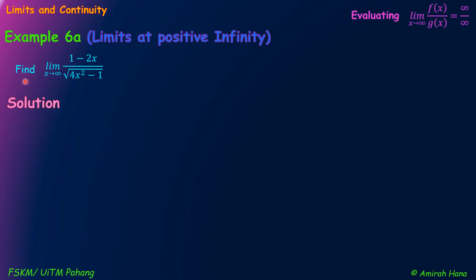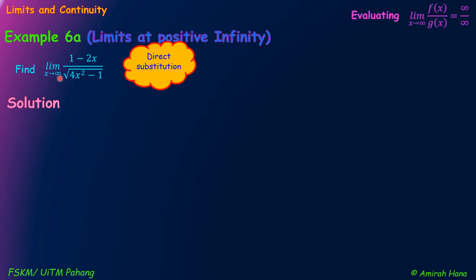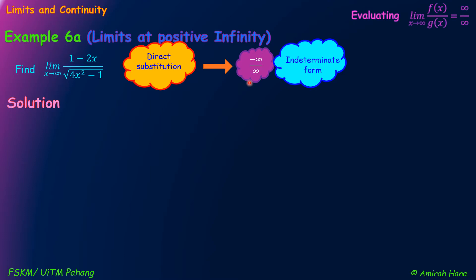From the given question, find the limit as x approaches positive infinity of (1 minus 2x) over the square root of (4x squared minus 1). If we use direct substitution, we plug in infinity for x. We get 1 minus infinity, which is negative infinity, and from the denominator we get infinity. So the answer equals negative infinity over infinity, which is an indeterminate form.